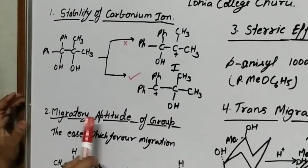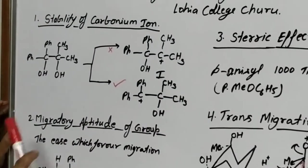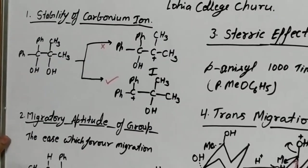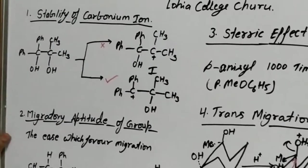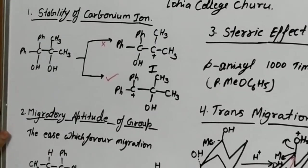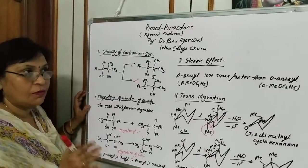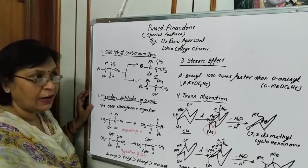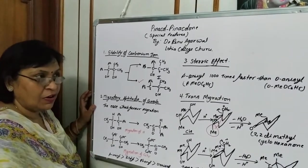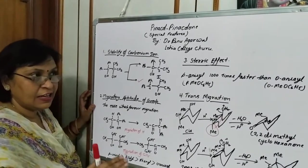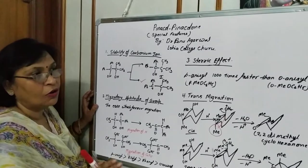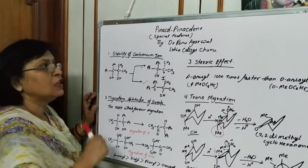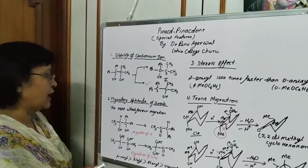The second special feature is migratory aptitude of the group. What is migratory aptitude of the group? It is the easiness which favors the migration of a group. That group will migrate which will favor the easiness to attack on the carbonium ion, as in the case of the phenyl group reaction.